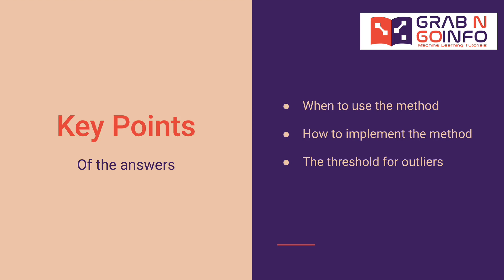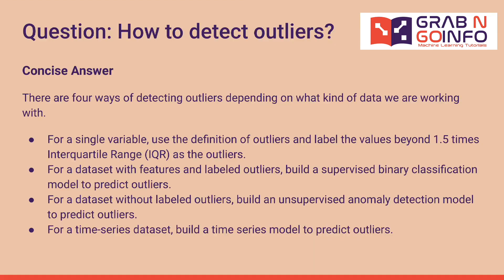Limit the time to answer each follow-up question to one to two minutes if possible. Here is an example answer to the question: how to detect outliers. There are four ways of detecting outliers depending on what kind of data we are working with. For a single variable, we can use the definition of outliers and label values beyond 1.5 times the interquartile range as outliers. For a dataset with features and labeled outliers, we can build a supervised binary classification model. For a dataset without labeled outliers, we can build an unsupervised anomaly detection model. For a time series dataset, we can build a time series model to predict outliers.